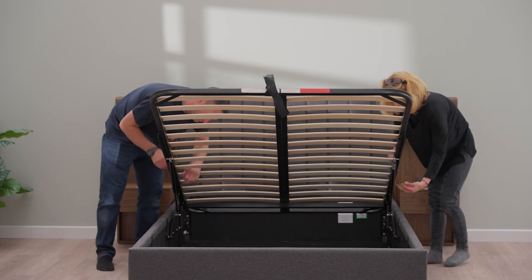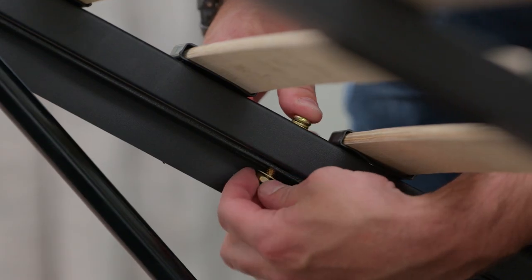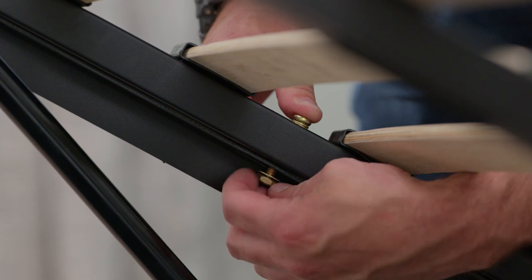Using three bolt sets on each side, secure the slat frame to the support bars by placing the bolts in the centre of the long holes.